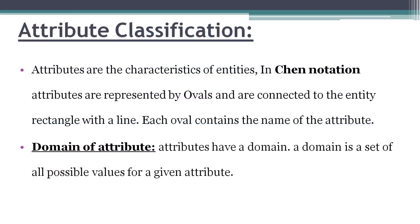First one: Attribute Classification. What is an Attribute? An attribute is nothing but the characteristic of an entity. In notation, attributes are represented by ovals, and these ovals are connected with a line to the rectangle. The rectangle is nothing but an entity.